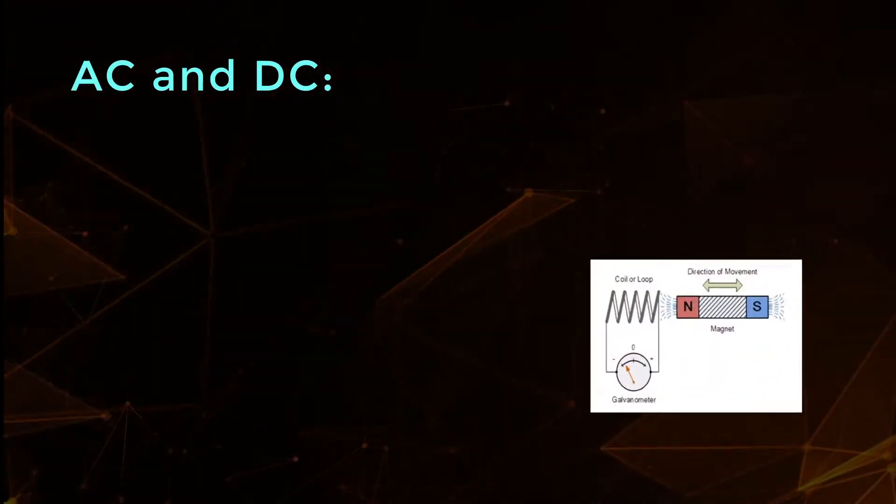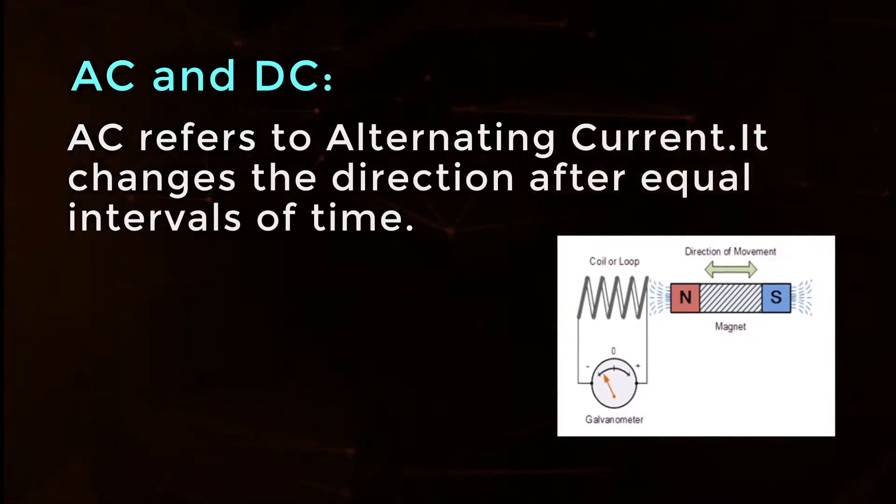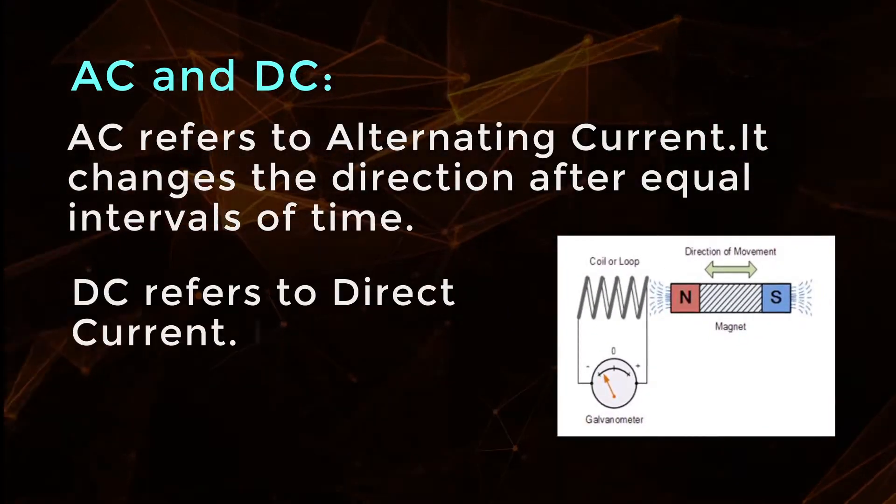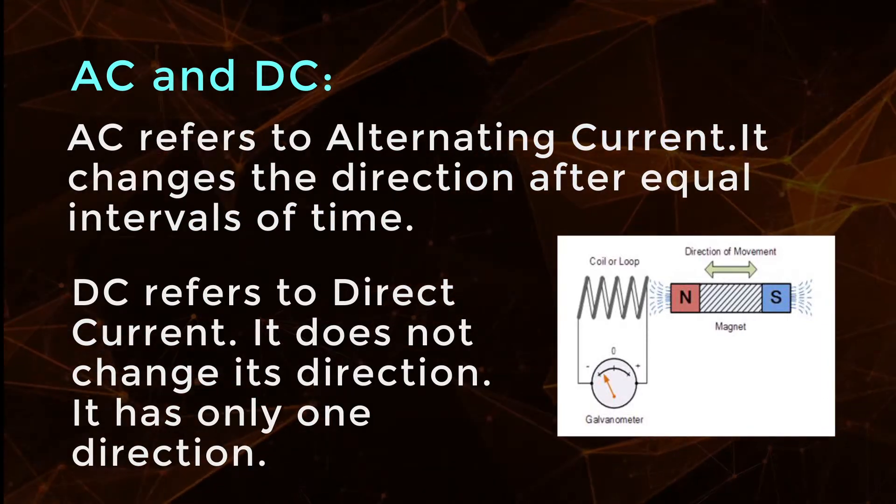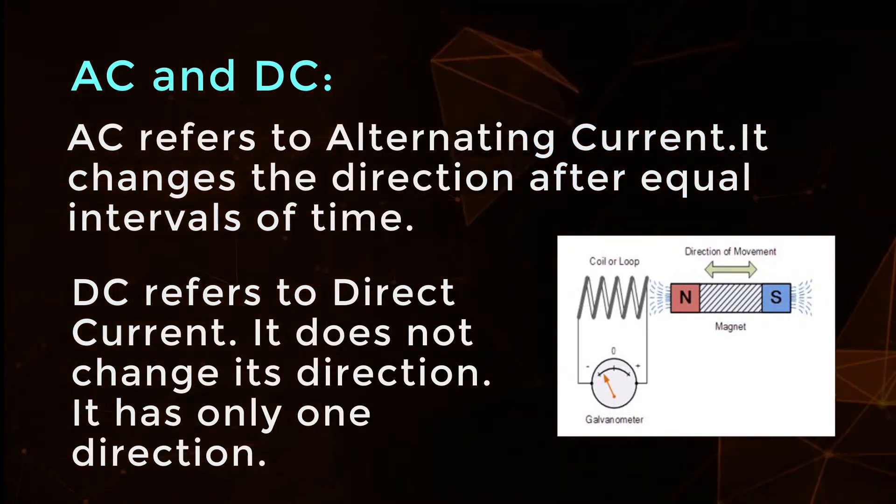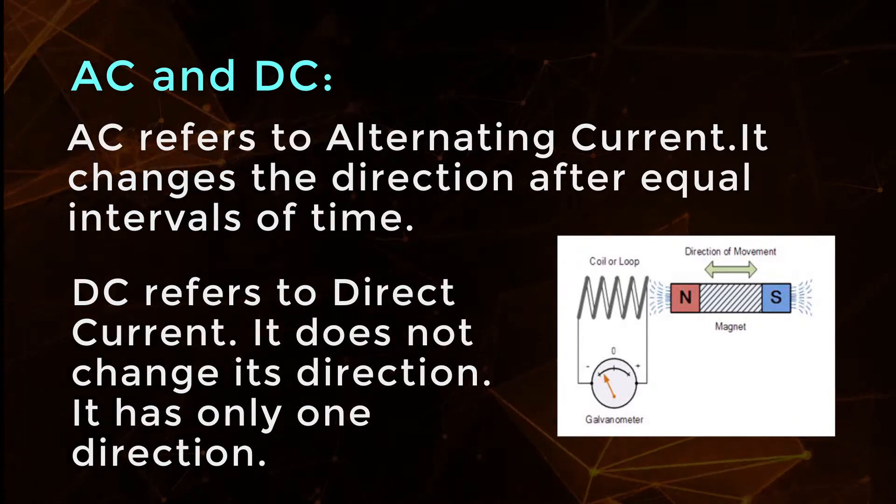AC and DC: AC refers to alternating current. It changes the direction after equal intervals of time. DC refers to direct current. It does not change its direction. It has only one direction.